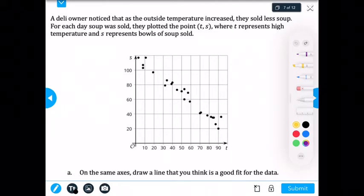So it says a deli owner noticed that as the outside temperature increased, they sold less soup. For each day soup was sold, they plotted the point (T, S), where T represents high temperature and S represents bowls of soup sold.